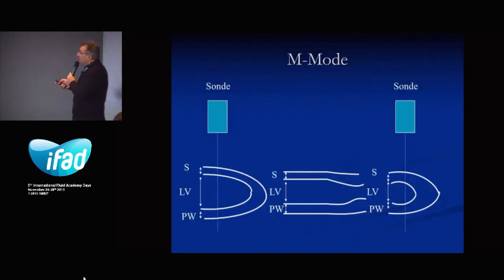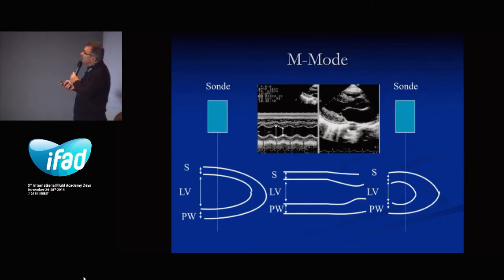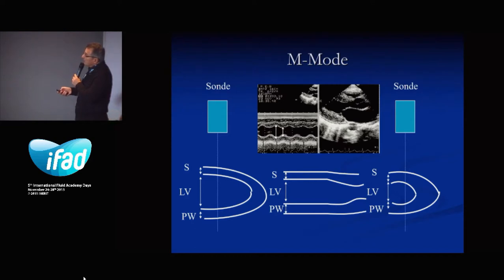There are different modes used in echo. The first is the M-mode. We use only one line through the heart — for example, through the left ventricle — so this beam hits the septum and then the posterior wall. We are perpendicular to the posterior wall, giving us imaging of the size of the left ventricle during diastole and during systole.